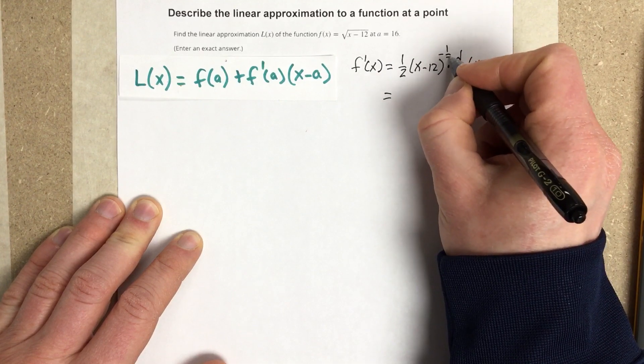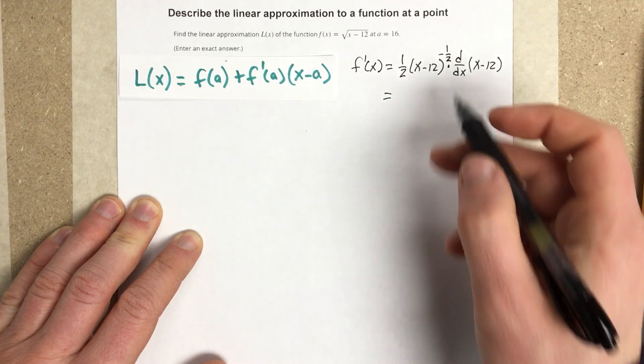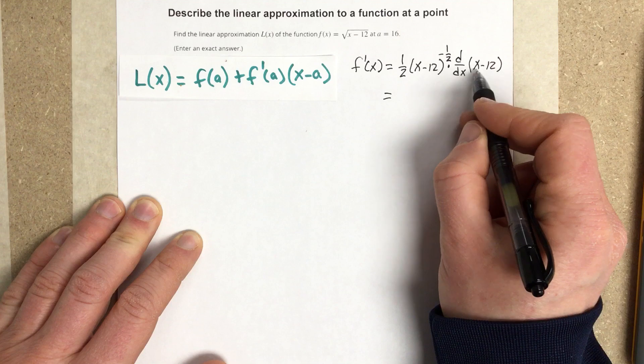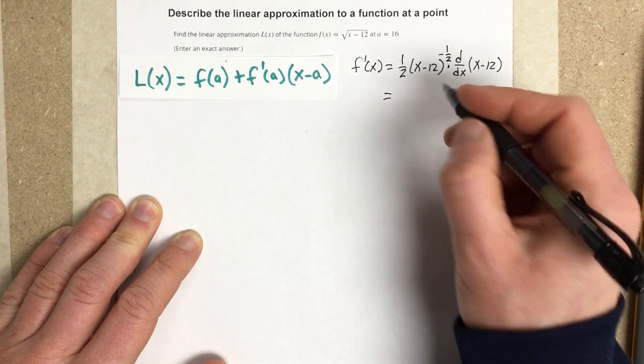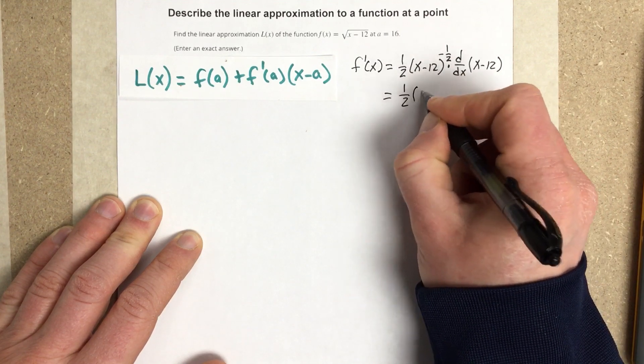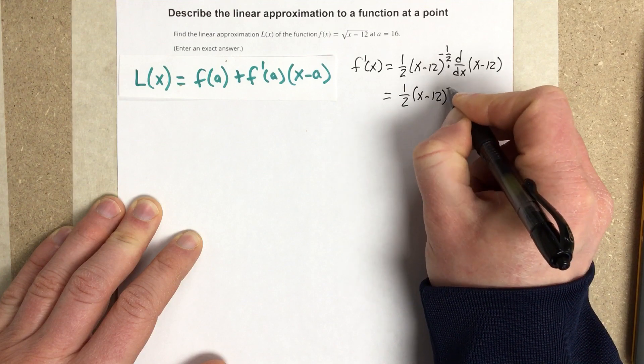And I forgot the negative one-half on the power. So I end up with, derivative here would be 1. Multiply that to the front, I get one-half x minus 12 to the negative one-half.